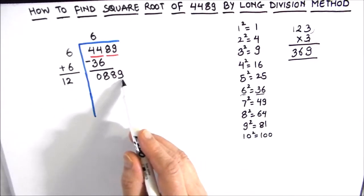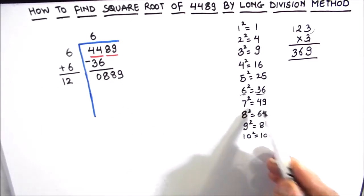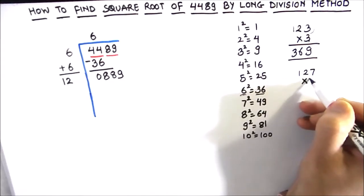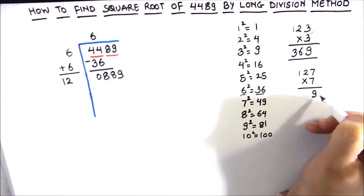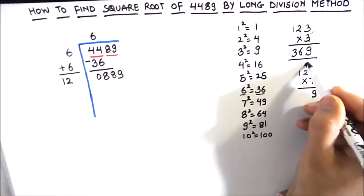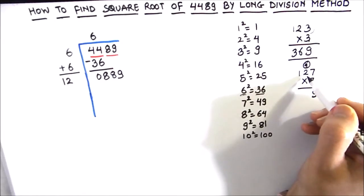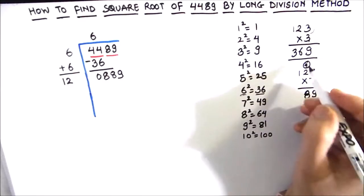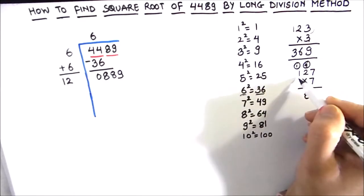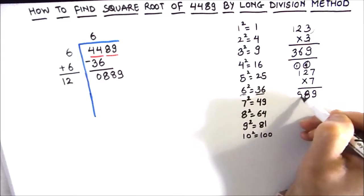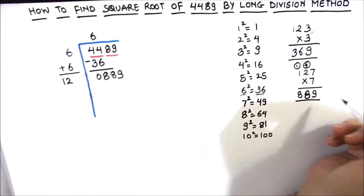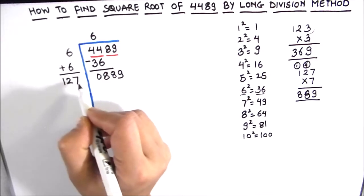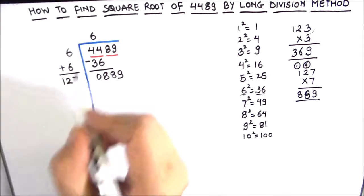The other number which can give 9 in the units place is 7. So let us try 7. 127 times 7: 7 times 7 is 49, 4 is carried over. 7 times 2 is 14, 14 plus 4 is 18, so we will write 8, 1 is carried over. 7 times 1 is 7, plus 1 is 8. So we got the same number as 889. So we are going to annex 7 here.